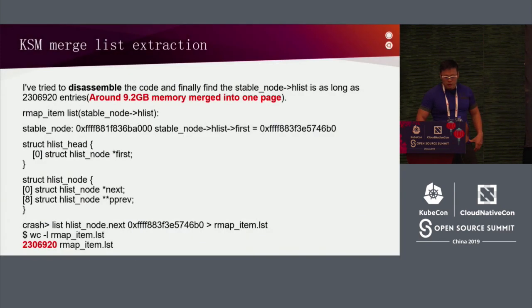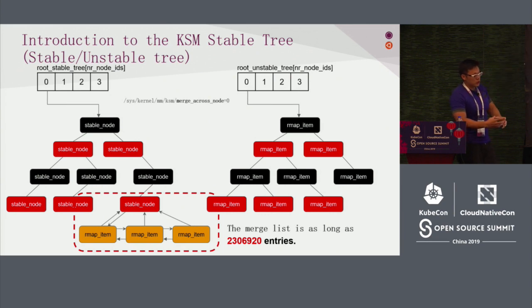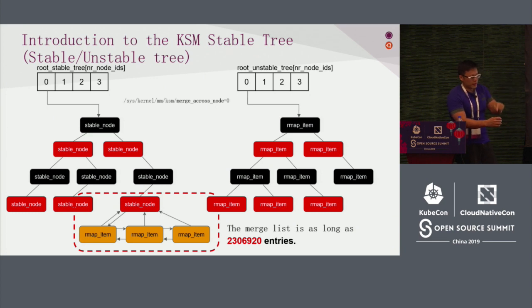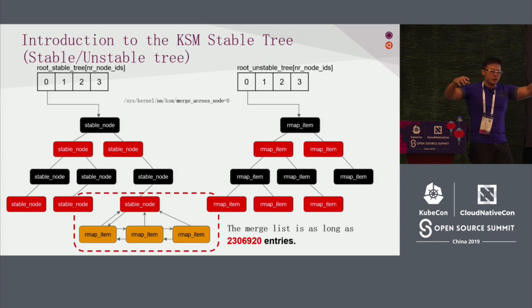How to solve this problem? You need to understand the KSM tree structure. KSM has two trees: one stable, one unstable. When merging a page, if it's not stable, you cannot merge it immediately. If you go directly to stable, a page fault will happen instantly. So it's first placed in the unstable tree, and after being scanned twice without changes, placed in stable tree. We look at the stable tree and can see that same pages are merged into one, and all the PTEs are merged into one page.